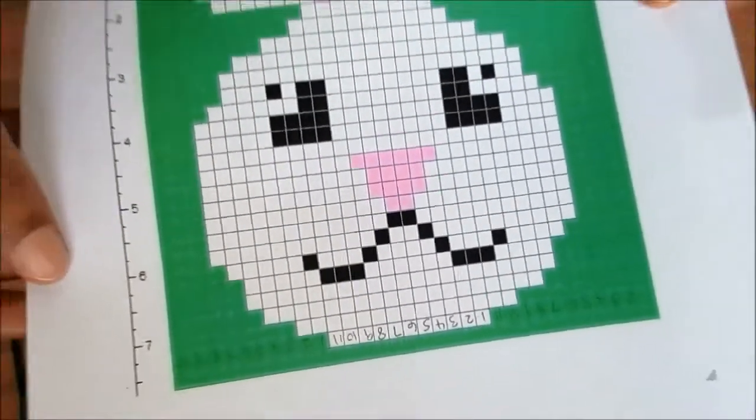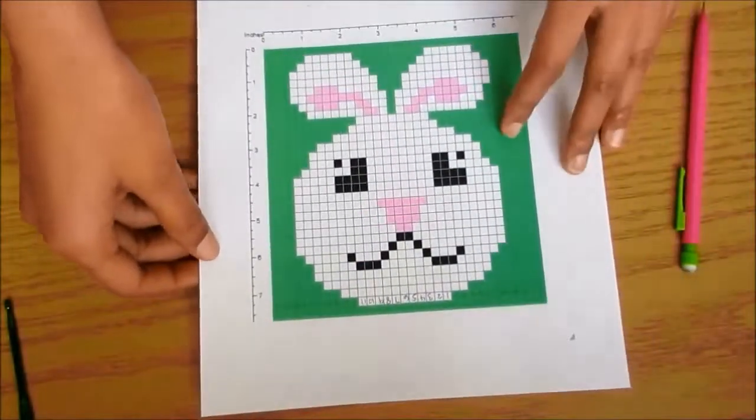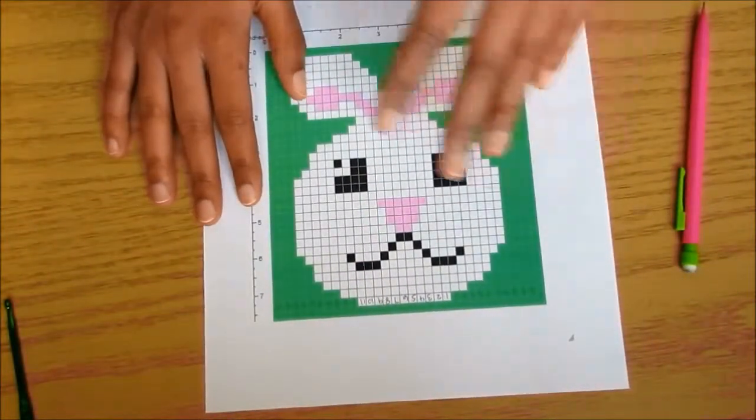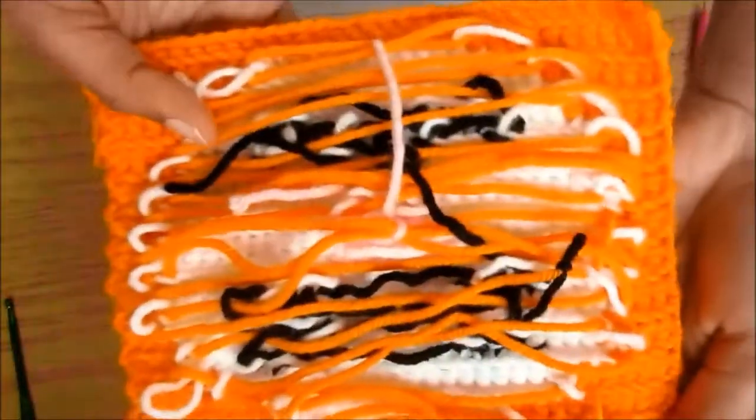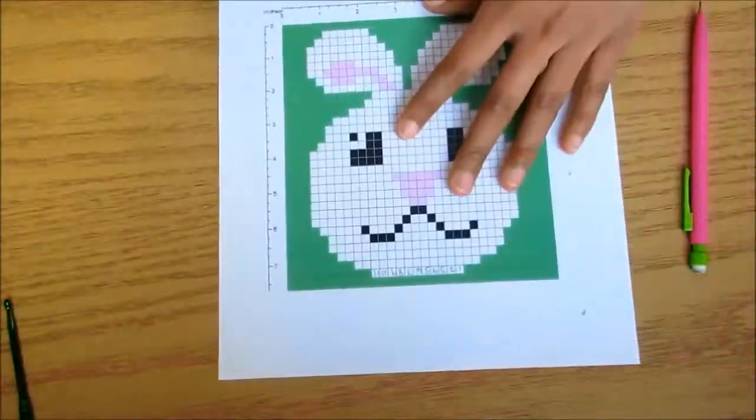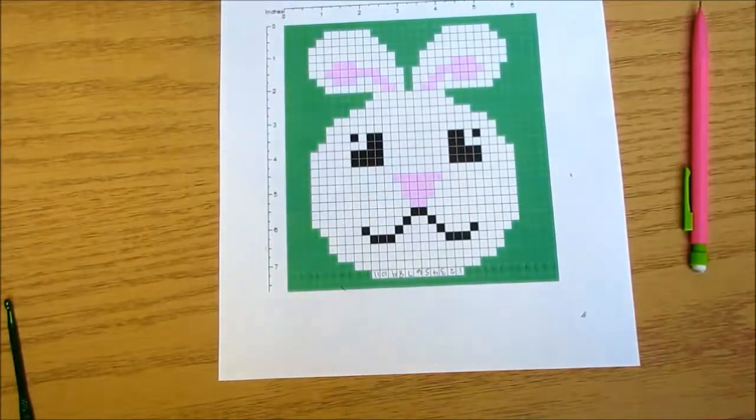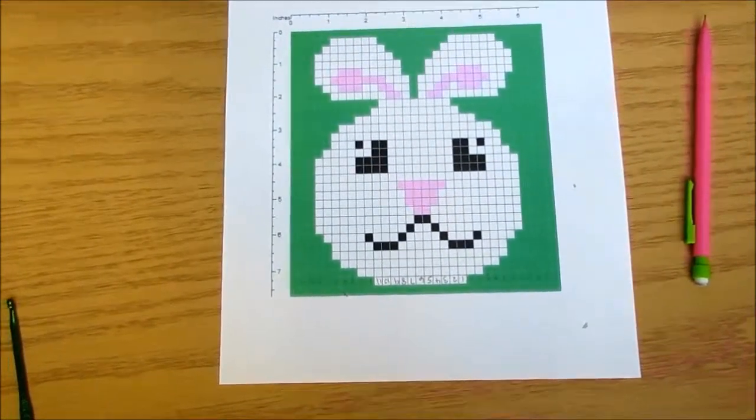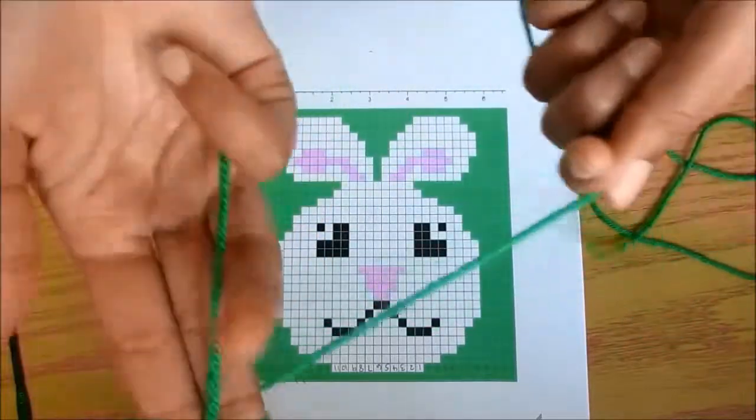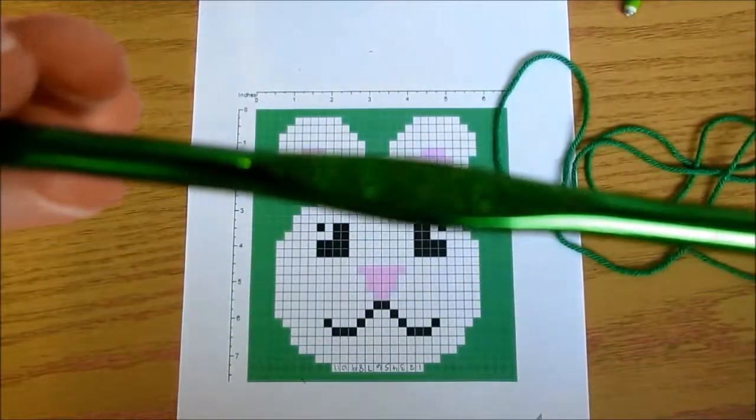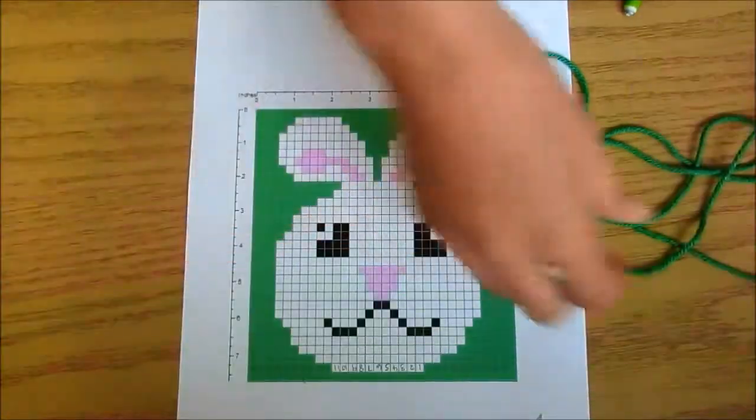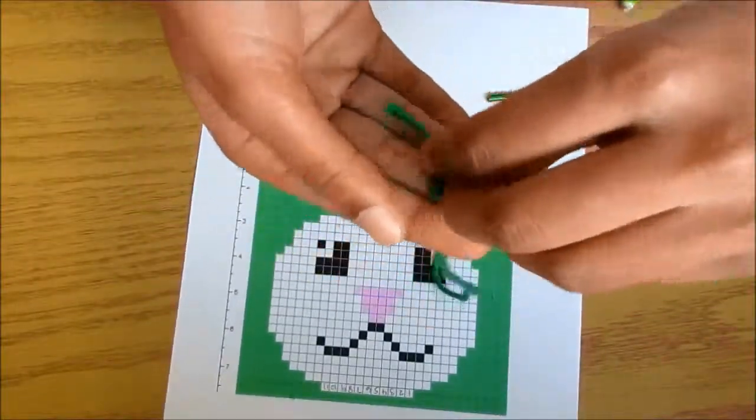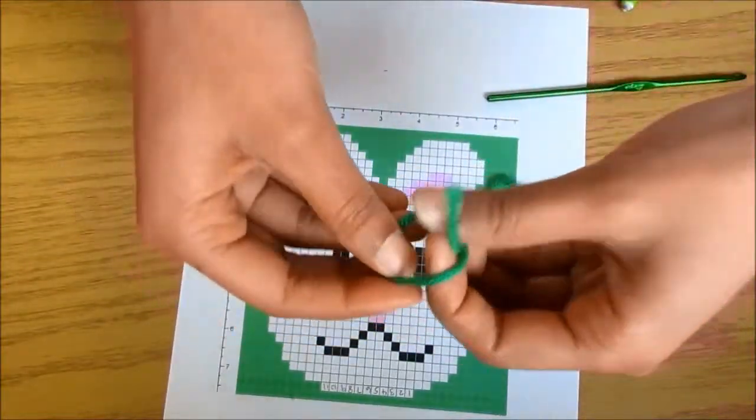So now I'm going to go ahead and start this first one for you, so I can show you how to change colors correctly, because I know this is probably confusing as to why this translates to this. Like with our pattern here, we're going to start with our green. We're going to be using a G hook. And we're going to go ahead and chain our first 32 and then do our first row of solid green.